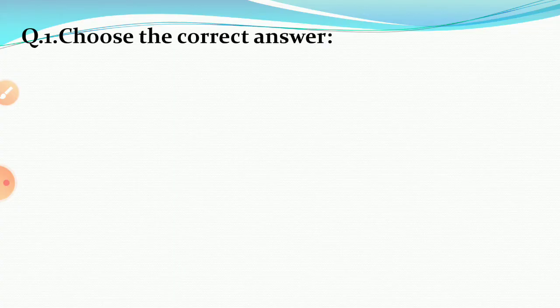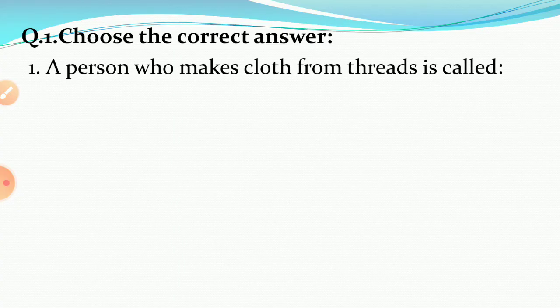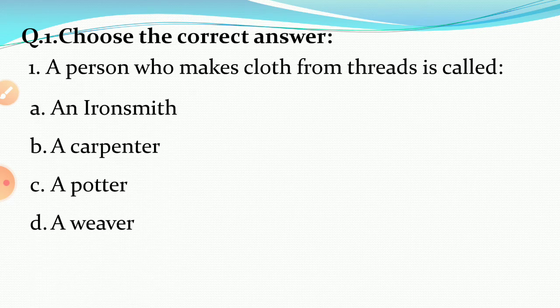First question is choose the correct answer. A person who makes clothes from thread is called an ironsmith, a carpenter, a potter, or a weaver. The correct answer is a weaver.